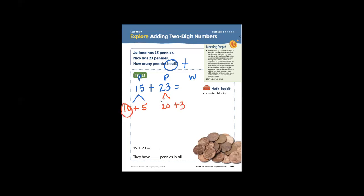Then we can add our tens together. 10 plus 20 equals 30. Then add the ones. 5 plus 3 equals 8. 30 plus 8 equals 38. So 15 plus 23 also equals 38. There are 38 pennies in all.